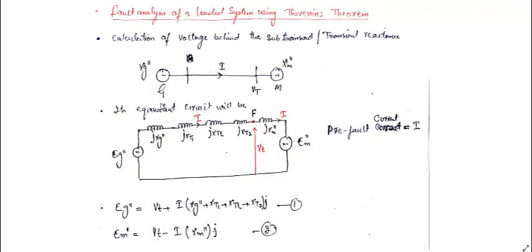Let us say we have a simple system — a generator whose subtransient reactance is given by Xg double dash, connected to a bus with a step-up transformer, then a transmission line, another step-down transformer. We have the bus voltage Vt here, and a synchronous motor whose subtransient reactance is Xm double dash. The equivalent circuit includes the generator, transformer T1, transmission line, transformer T2, and the motor.